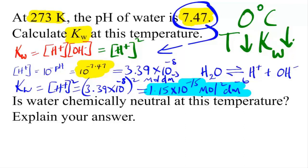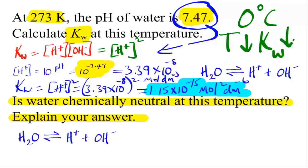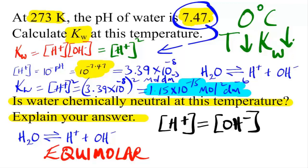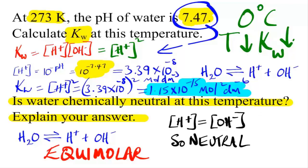Is water chemically neutral at this temperature? From the equation, hydrogen ions and hydroxide ions are produced in equimolar amounts — their concentrations are the same. As a result, the water is still neutral. So though the pH is 7.47 rather than 7.00, the water is neutral at that lower temperature.